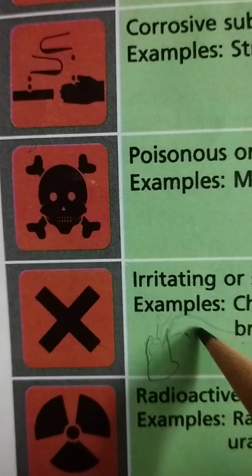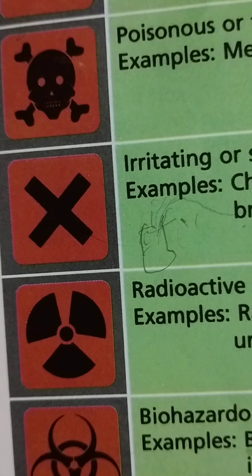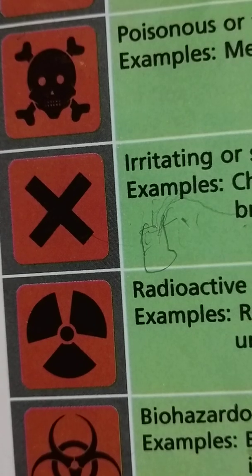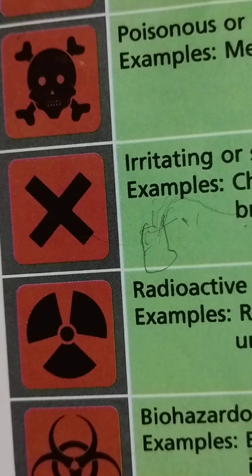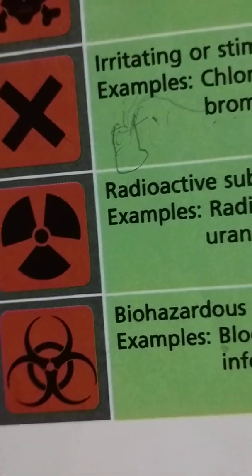The next symbol is used for radioactive substances. Radioactive substances are those which naturally decay or decompose. Nuclear reactions occur in radioactive substances and they can ionize chemicals within the body. All radioactive substances can cause cancer. Therefore, strictly follow safety precautions when handling radioactive substances.